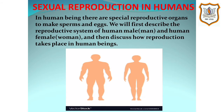Now we will discuss sexual reproduction in humans. In human beings, there are special reproductive organs to make sperms and eggs, to bring together sperms and eggs for fertilization and make a zygote, and for the growth and development of a zygote into a baby. We will first describe the reproductive system of human male, i.e. man, and human female, i.e. woman, and then discuss how reproduction takes place in human beings.